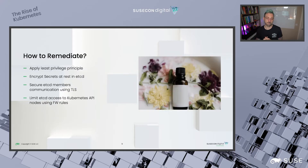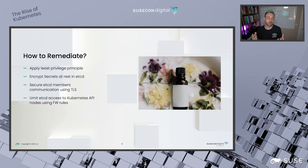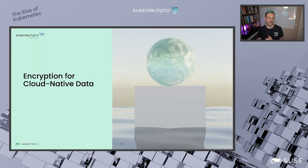So you want to get your secrets encrypted in etcd. Also, anyone who can connect to a pod associated with a service account that has read permission for secrets can read all secrets in a given namespace. To remediate these issues: apply the least privilege principle for your Kubernetes users, encrypt secrets at rest in etcd, secure all etcd members so communication uses TLS, and limit etcd access altogether using stateful firewall rules to reduce the attack surface from your control plane.